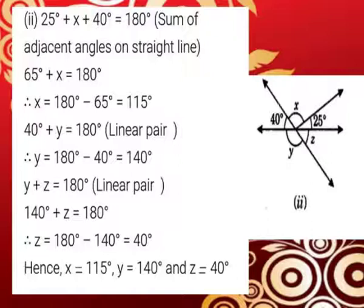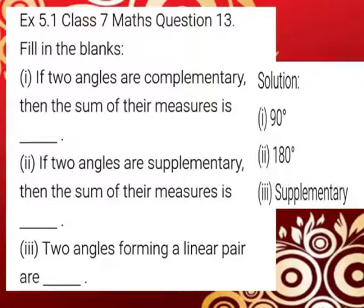Next, y plus z equals 180 degrees. We find the value of y is 140 degrees. Substituting: 140 degrees plus z equals 180 degrees. Transposing, z equals 180 minus 140 degrees, which equals 40 degrees. Thus, x equals 115 degrees, y equals 140 degrees, and z equals 40 degrees.